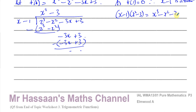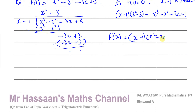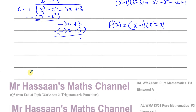So I know (x - 1)(x² - 3) gives x³ - x² - 3x + 3. We can verify: x³ - 3x - x² + 3 — that is correct. So f(x) = (x - 1)(x² - 3). We can now solve the equation: when f(x) = 0, we have (x - 1)(x² - 3) = 0.